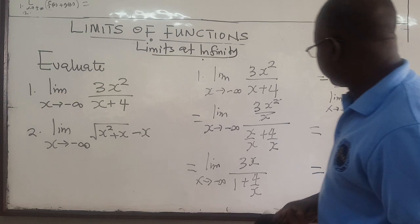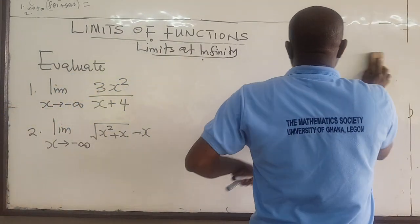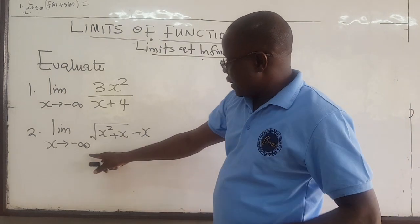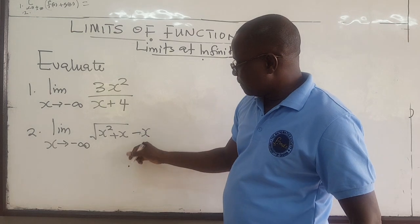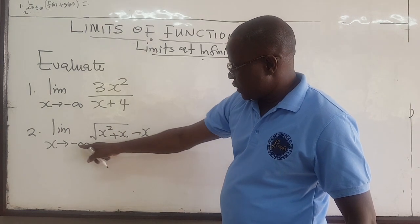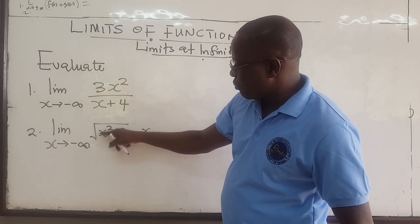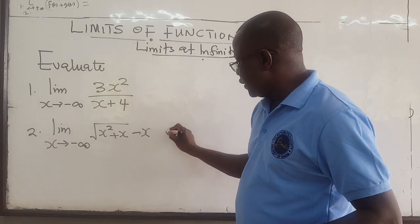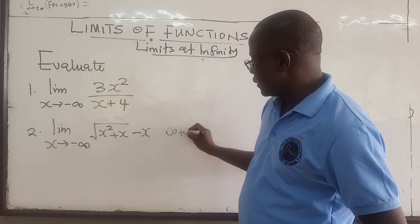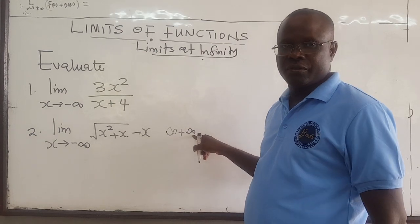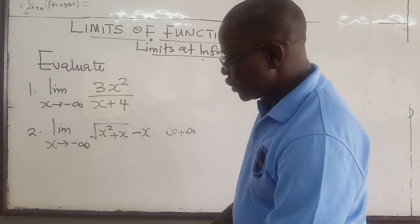Now let's do the second one, which is more tricky. We want to find the limit as x goes to negative infinity of square root of x squared plus x, minus x. Notice that as x goes to negative infinity, the square root term goes to positive infinity, and the minus x term also goes to positive infinity. So you have infinity plus infinity — this is indeterminate. You have to do something to the expression to be able to find the limit.